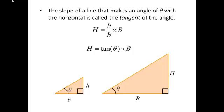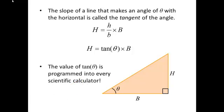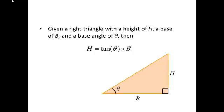And so now we have a clever formula that allows us to find the height of a triangle if we know its base and its base angle. Even better, the value of tangent of theta is programmed into every scientific calculator, so we don't actually need to measure the scaling factor on our own. So let's summarize this result. Given a right triangle with a height of h, a base of b, and a base angle of theta, then the height is always equal to the tangent of the angle times the length of the base.